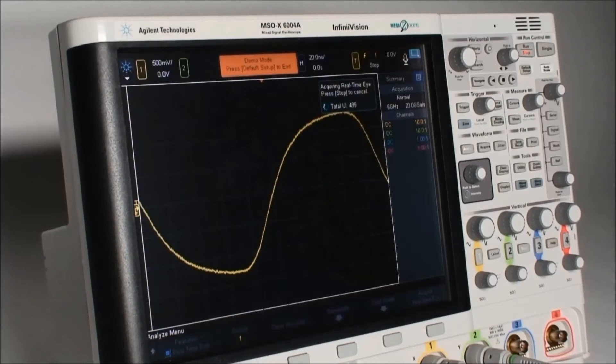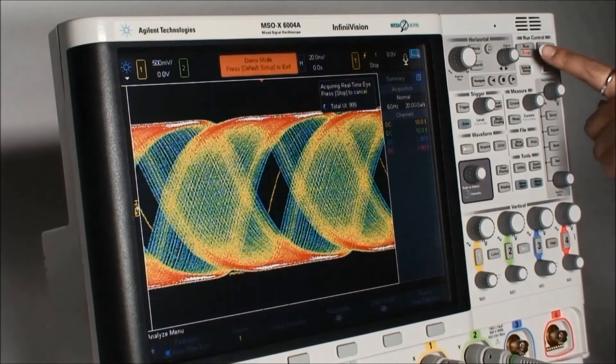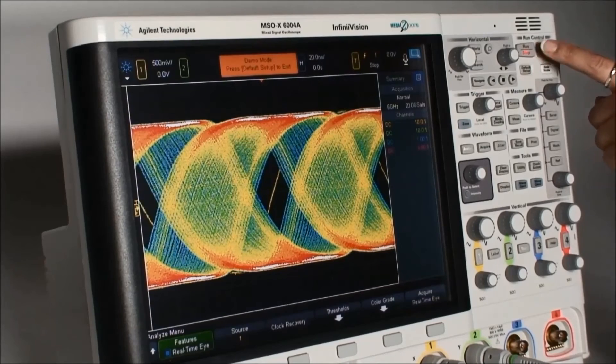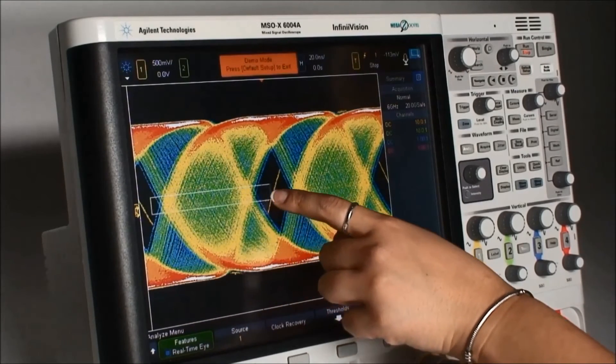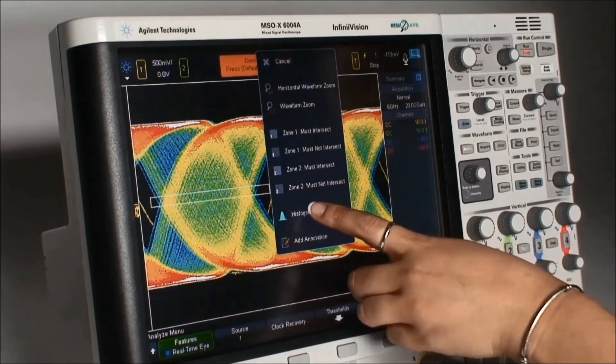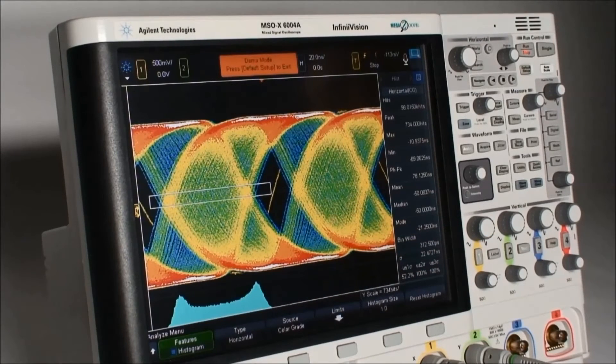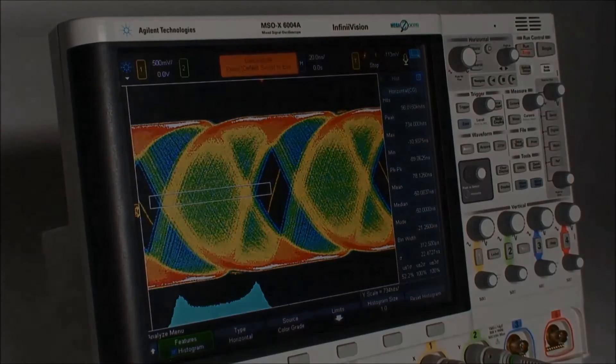An eye diagram is an overlay of individual bits based on the clock recovery. You can see here that the eye is closed, which is due to the edge shifts of each bit. We can also draw a box at the signal's zero crossing and enable the histogram to visualize the jitter distribution within the box.